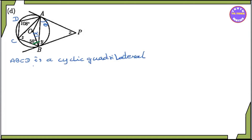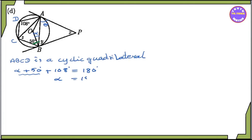The cyclic quadrilateral is L5 plus 50 degrees. Plus the Y8 degree, Y8 degree is equal to the Y8 degree. Alpha is equal to 180 degrees minus 158 degrees. Alpha is equal to 22 degrees.